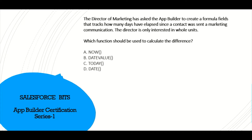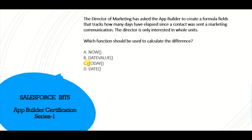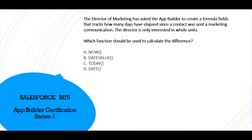Moving on: the Director of Marketing has asked the app builder to create a formula field that tracks how many days have elapsed since a contact was sent marketing communication. The director is only interested in whole units. We need to identify which function returns the number of days — options include NOW, DATE, VALUE, TODAY, and DATE. The Salesforce documentation says to find days between two dates, use TODAY. The correct answer is TODAY.